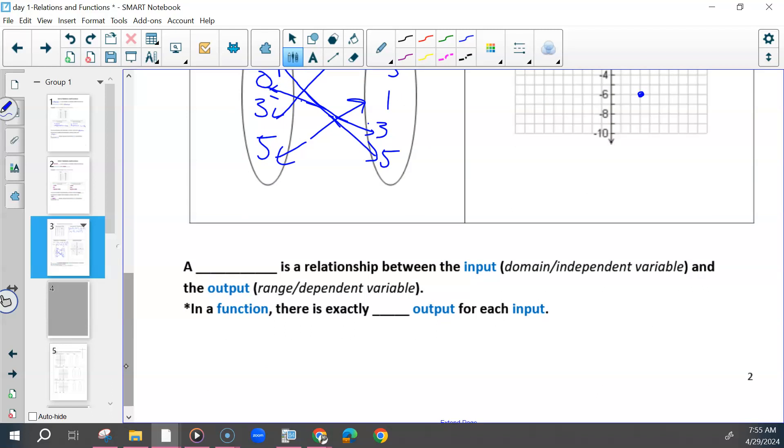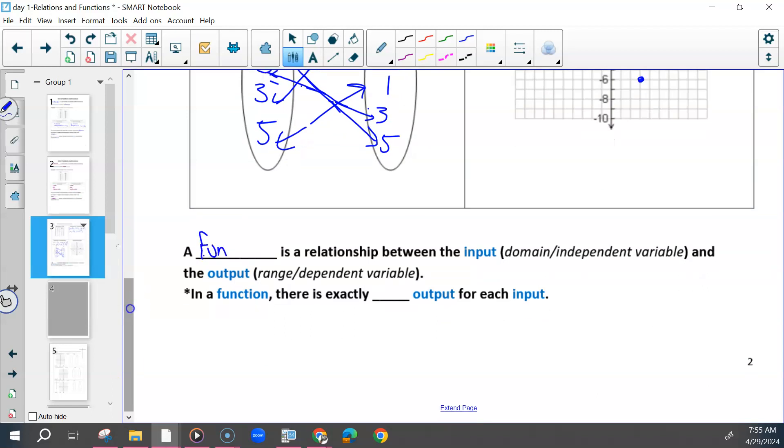A function is a relationship between the input, or the domain, or the x-values, independent variable, and the output, or the range, dependent variable, y-values. And in a function, there's exactly one output for each input. That means each x-value can only have one y-value.